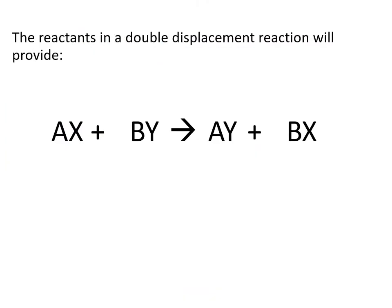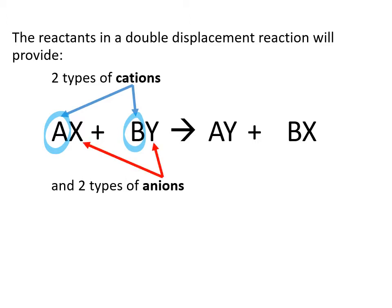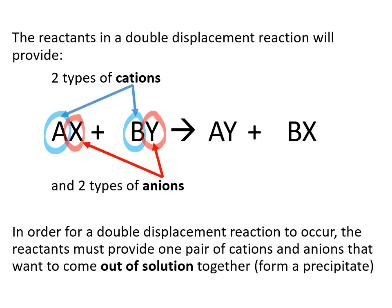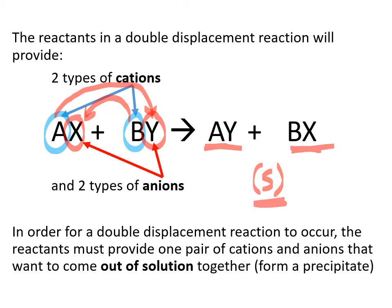With a double displacement reaction, this is essentially what happens. If you have two ionic compounds in solution, they will both have a cation and an anion. For the double displacement reaction to happen, there has to be one combination of an anion and a cation — either AY or BX — that comes together as a solid. If that happens, you will get a precipitate; the other will remain in solution. As long as one of the new pairs is more attracted to each other than to water, you will have a precipitate form.